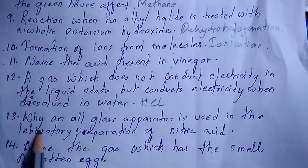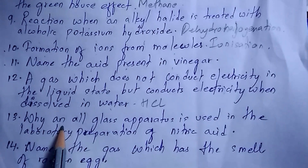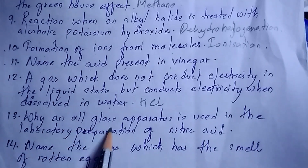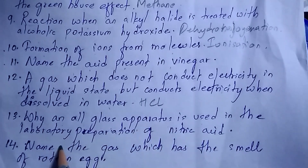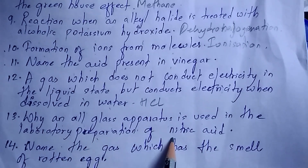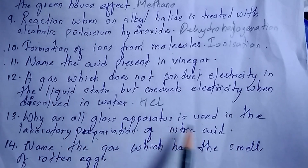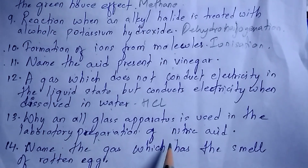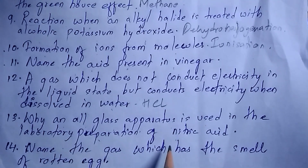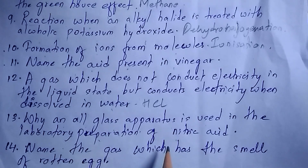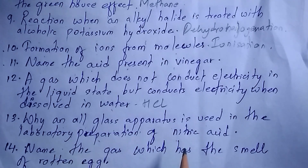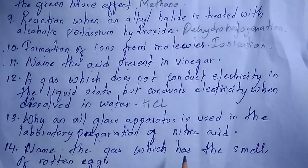Next question: why is all-glass apparatus used in the laboratory preparation of nitric acid? All-glass apparatus is used because nitric acid is highly corrosive and it can damage plastic, rubber, wood, and metals. Therefore an all-glass apparatus is used.